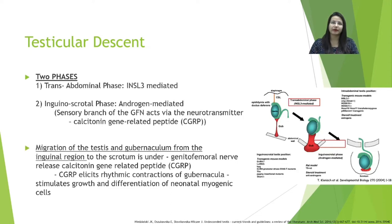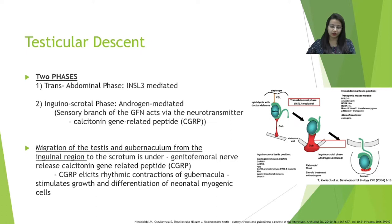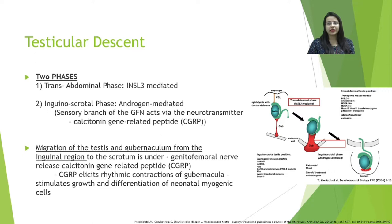There are two phases of testicular descent: the transabdominal phase and the inguino-scrotal phase. In the transabdominal phase, insulin-like factor 3 (INSL3) plays a very important role. It causes gubernacular outgrowth, leading to sudden swelling of the gubernaculum which dilates the inguinal canal, followed by regression of the gubernaculum, remodeling, and formation of a fibrous band that pulls the testes downwards. This dilatation also allows the processus vaginalis to invaginate into the scrotal cavity.